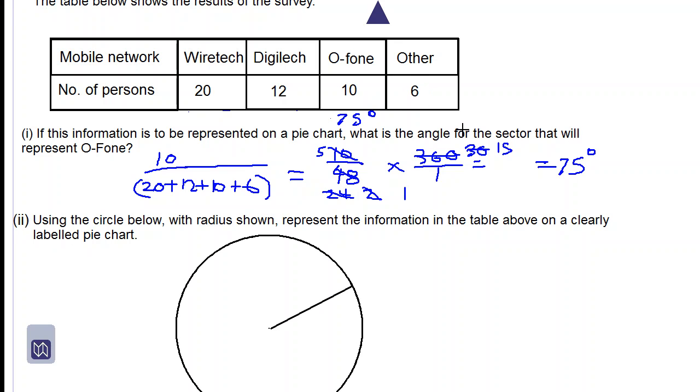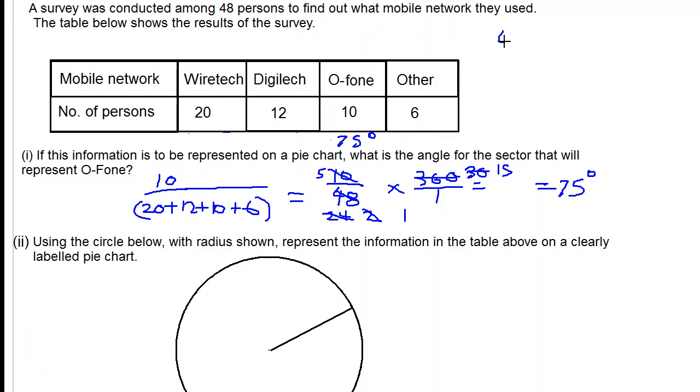And for Other, there are 6 people here. So 6 out of 48 multiplied by 360 over 1. 6 into 6 is 1. 6 into 48 is 8. 8 into 8 is 1. 8 into 32 is 4, remainder 4. 8 into 45. So we get 45 degrees.